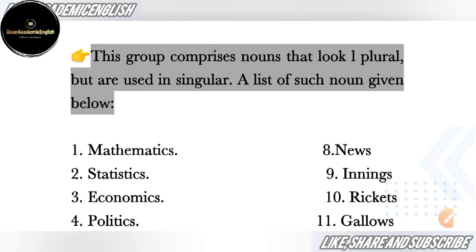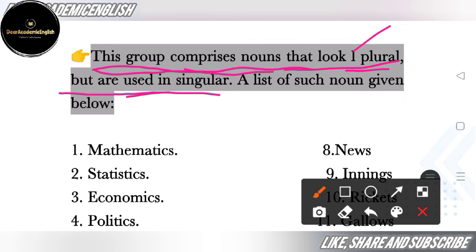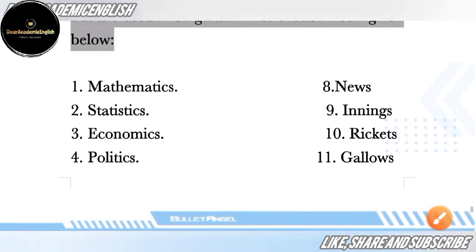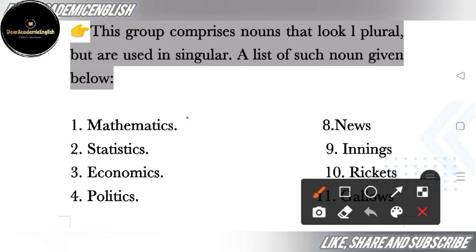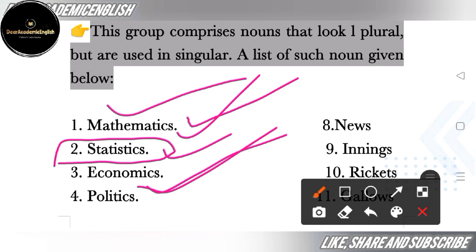Now let's look at the next rule. This group comprises nouns that look like plural but are used as singular. For example, we cannot make all of these plural. The first word is 'mathematics' — mathematics looks plural because of the 's', but it is not plural; it is always used as singular. Next is 'statistics', which is a chapter of mathematics — it also has an 's' but is used as singular. Next is 'economics' — also used as singular. Next is 'politics' — politics is also used as singular.